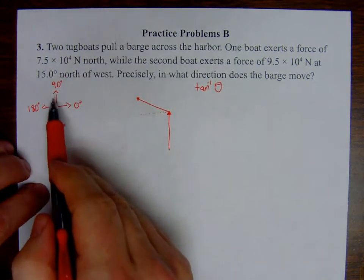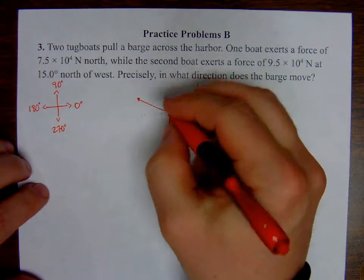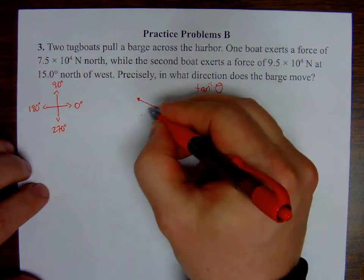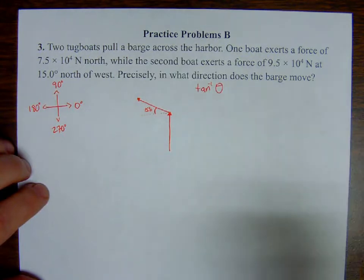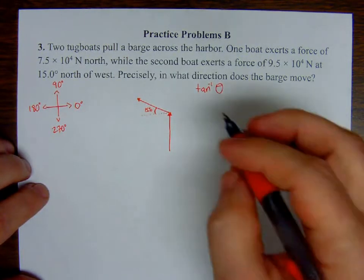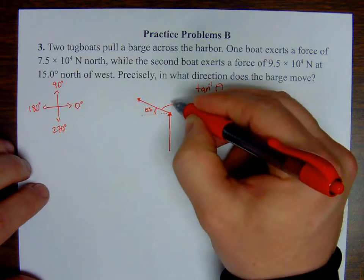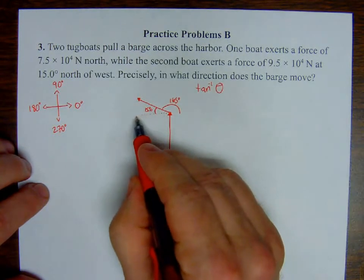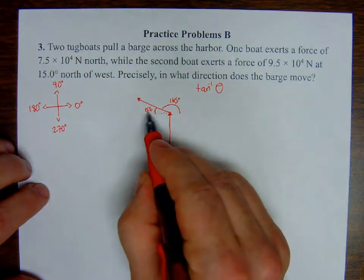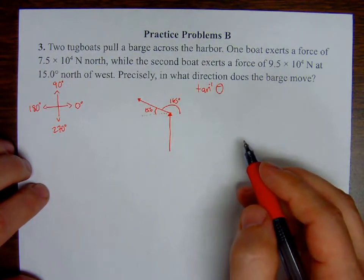What we can also say is that this angle is 165 degrees. This would be 180—15 less than 180—be 165. So what I need to do is I need to break down both of these triangles, even though one doesn't really look like a triangle. I'm still going to treat it like a triangle. I'm going to break both of these triangles down into their x and y components.